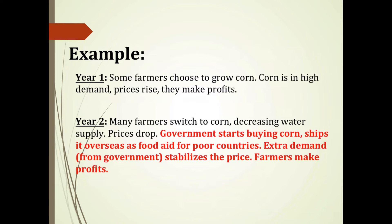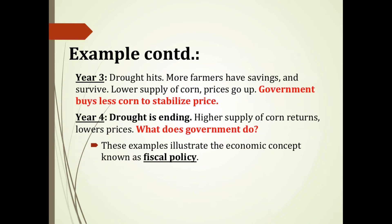In year three, a drought hits because so many farmers switched to growing corn after year two. Unlike the classical scenario where the poorest farmers lost their farms, Keynesian economic theory — by intervening in year two — would allow more farmers to have savings and thus be better able to survive year three's drought. The lower supply of corn kept prices up, and as a result, the government doesn't have to buy as much corn in order to stabilize prices.